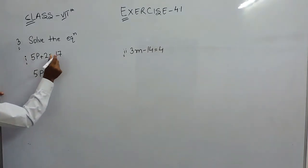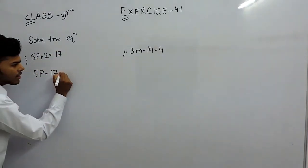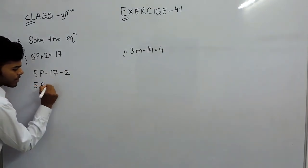That will be, it will remain 17 and this will change its sign, so minus 2. 5p equals 15.